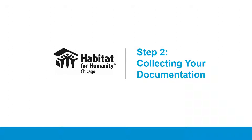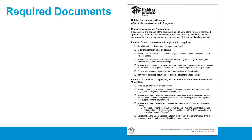In the event documents are not returned by the deadline, Habitat Chicago will deny your application based on its incomplete status. For documentation that requires coverage of a specific time period, all documents for that period must be submitted completely and with consecutive dates. You have a copy of the required documents list in your application packet, and you may also access this list on the Habitat Chicago website through a link in your post-information-session email. A version of this handout is shown on the screen now.